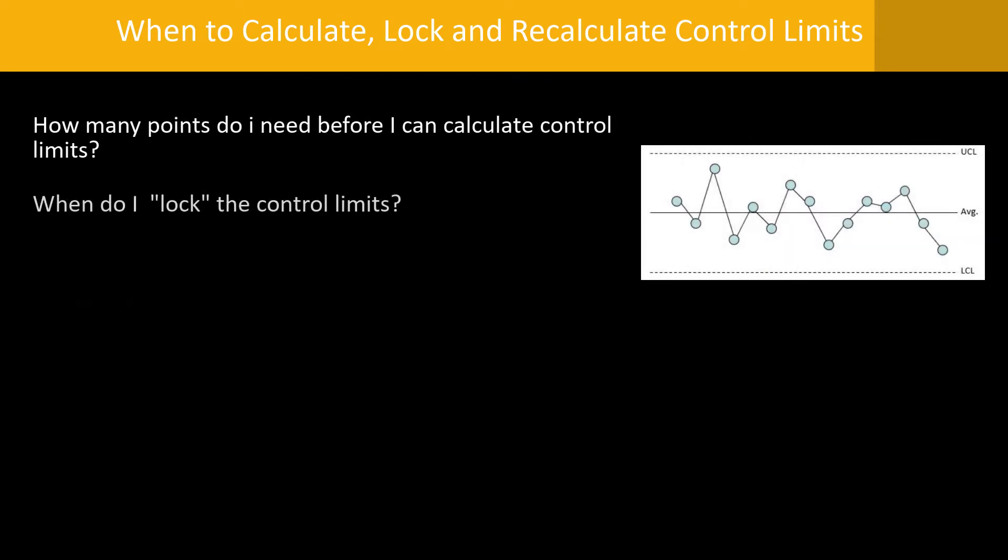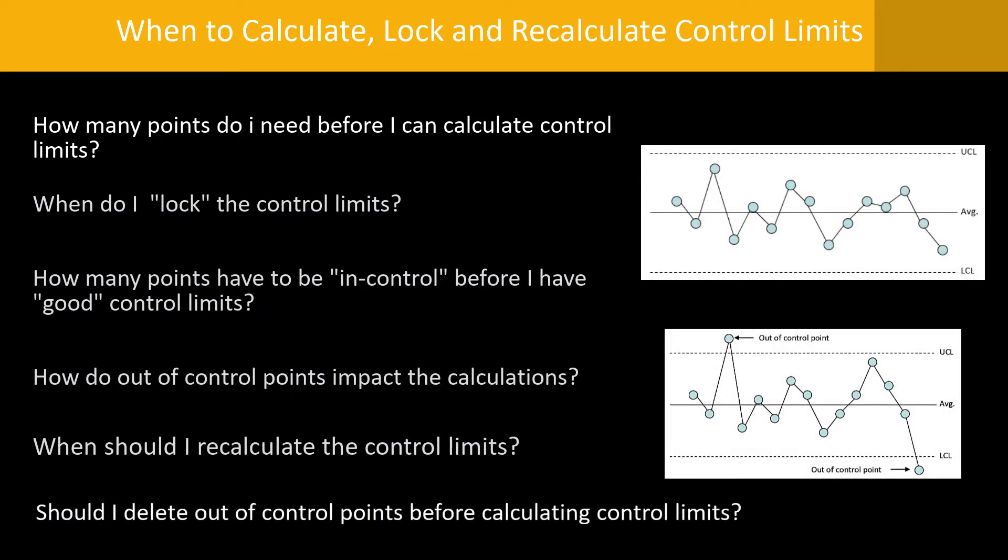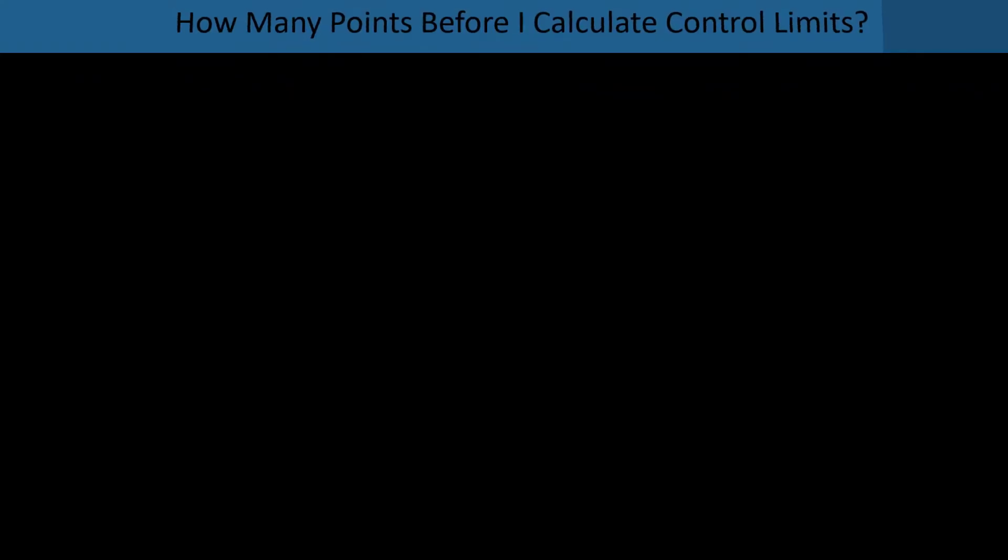How many points do I need before I calculate control limits? When do I lock them? How many have to be in control before I have good limits? Do out-of-control points impact the calculations? When should I recalculate? And should I delete out-of-control points before calculating the control limits?